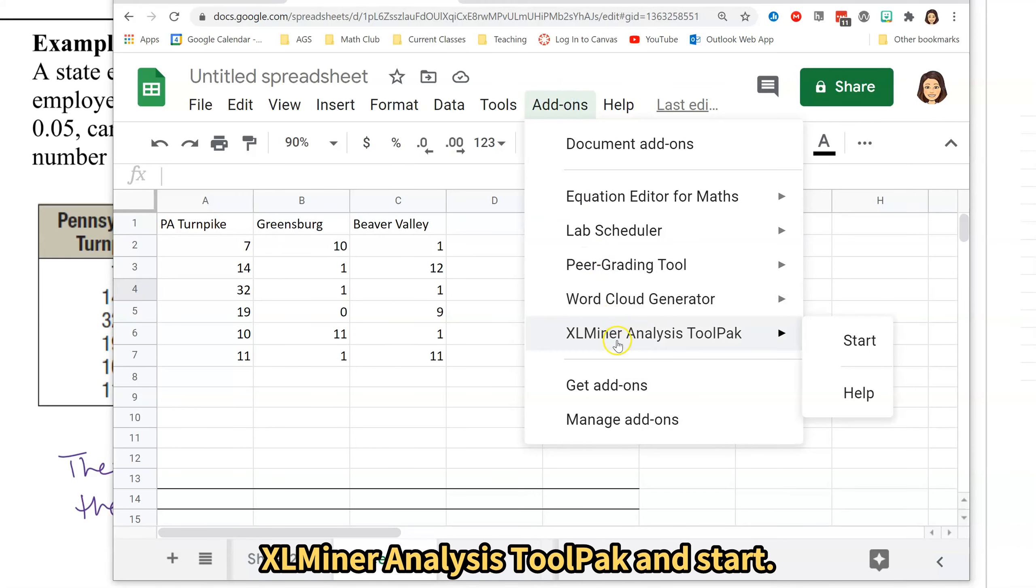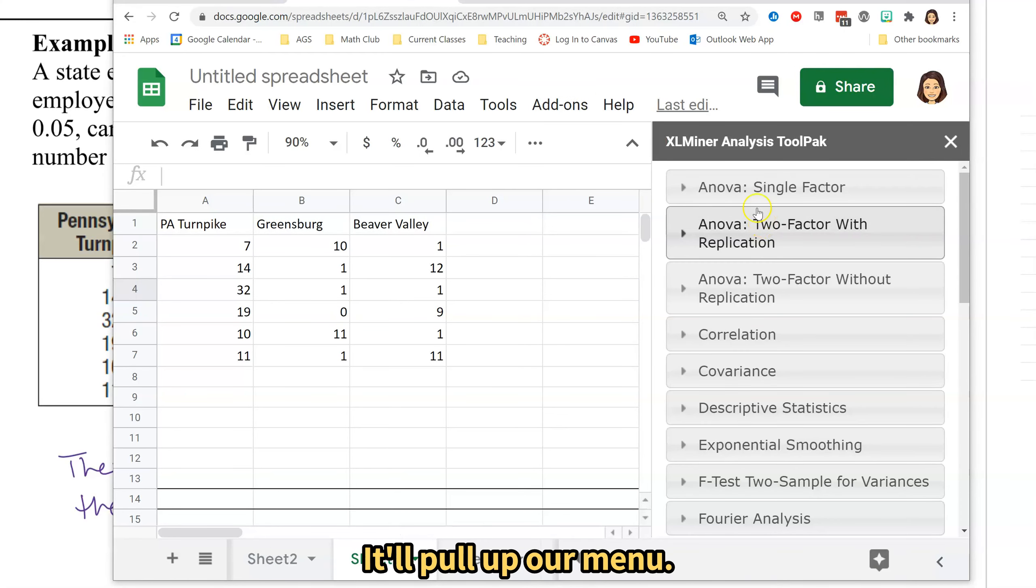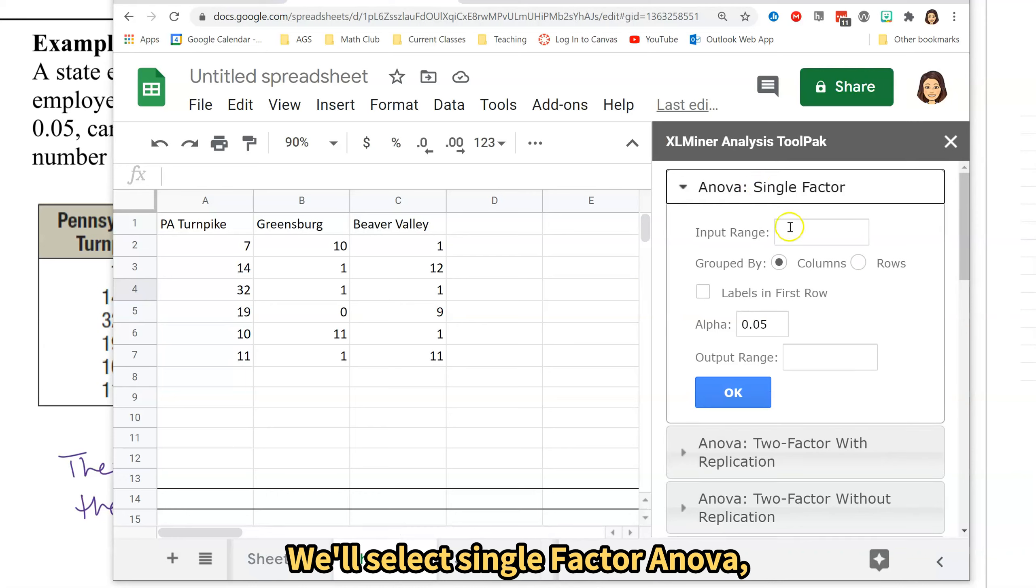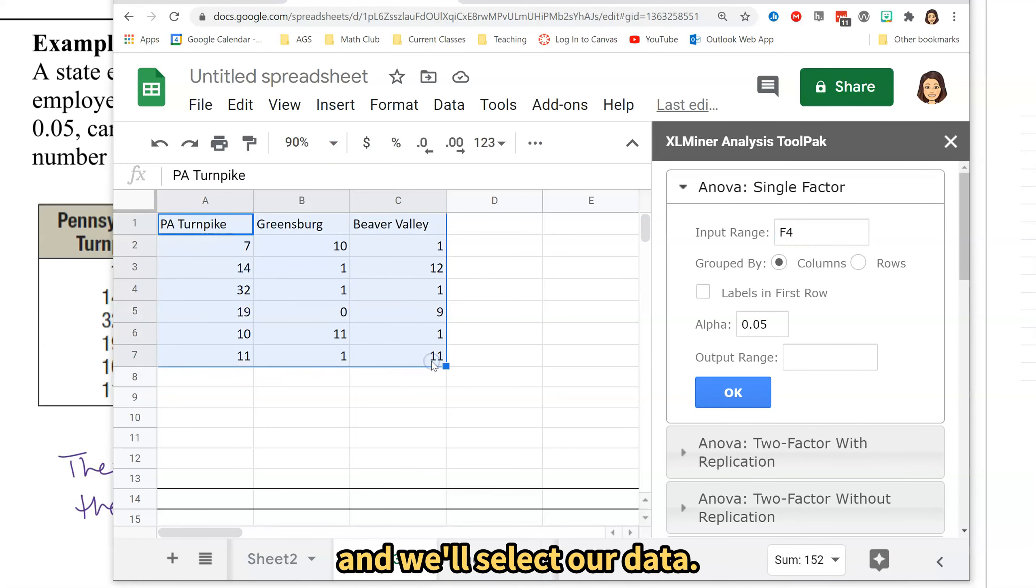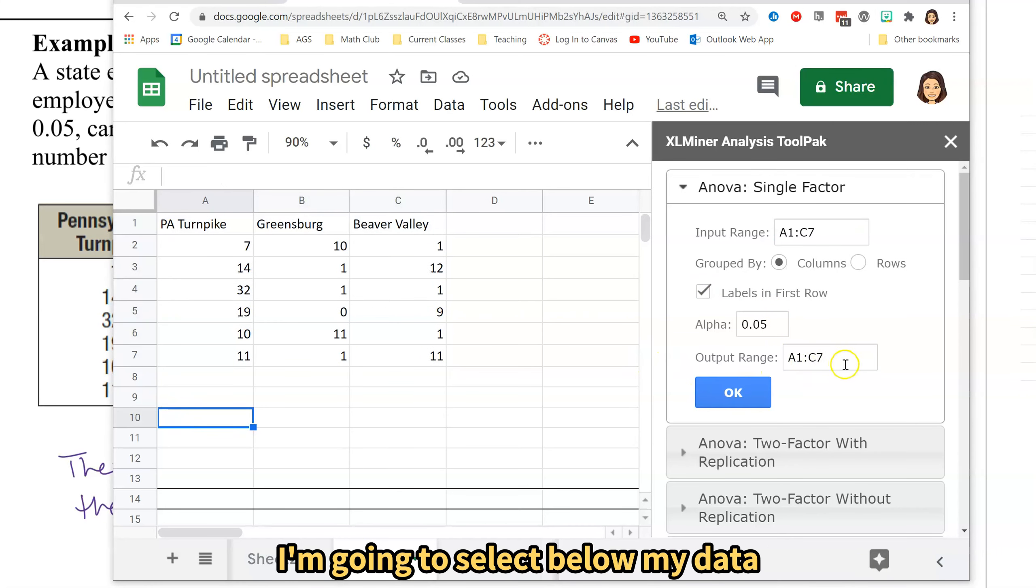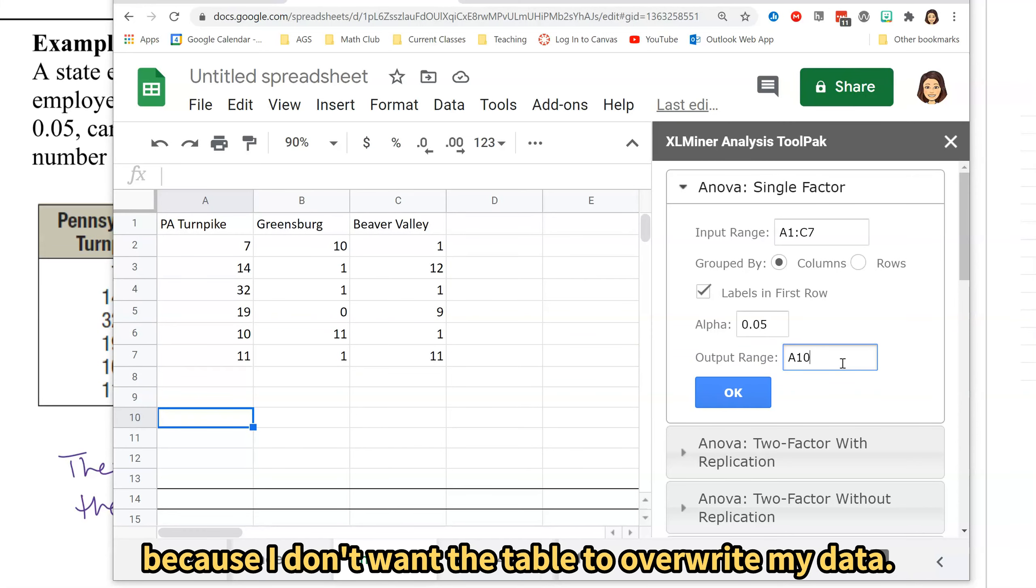We are going to click on add-ons, XL minor analysis tool pack, and start. It will pull up our menu. We will select single factor ANOVA and we will select our data. I am going to click over here and make sure that it accepts it. Grouped by columns. I kept my labels in the first row. Alpha is 0.05 and my output range I am going to select below my data because I don't want the table to overwrite my data.